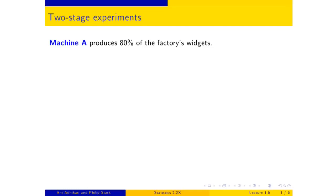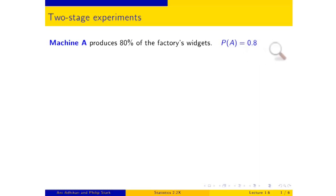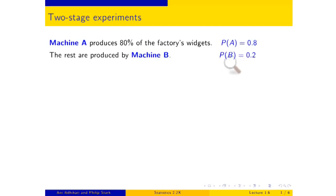So you've got a factory, and it's got two machines. Machine A produces 80% of its output. So if you pick one of the widgets at random, the probability that it is produced by machine A is 0.8. The remainder are produced by machine B, so the probability that your randomly picked object is produced by machine B is 0.2.